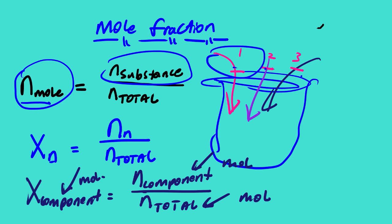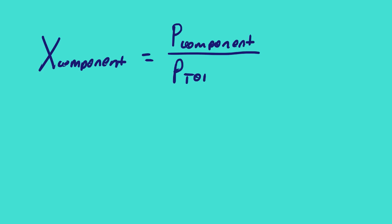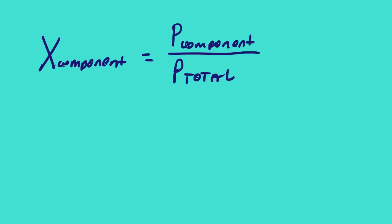There is another equation to calculate mole fraction: if you know the partial pressure of a component divided by the total pressure, that ratio gives you the mole fraction of that particular component. So if you are required to calculate the partial pressure of a gas and you have the mole fraction and the total pressure, you can use this equation by rearranging it.